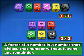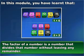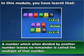A factor of a number is a number that divides that number without leaving any remainder. The factor of a number is always smaller than or equal to the number. A number which when divided by another number leaves no remainder is called the multiple of that number.